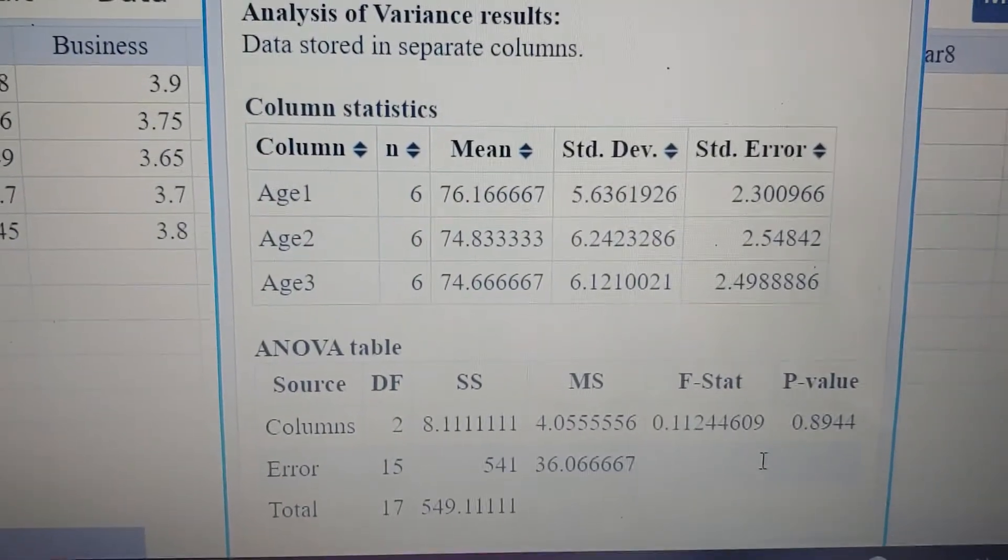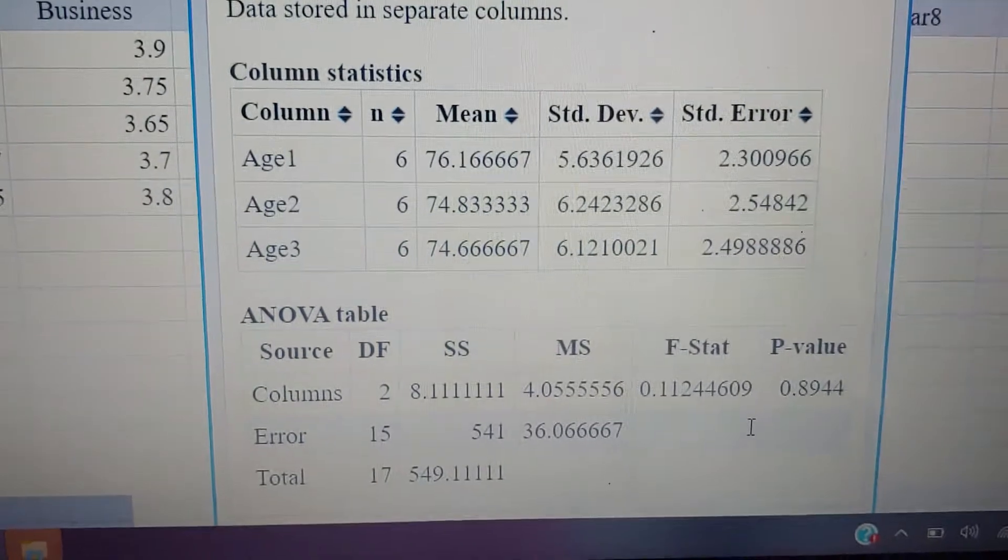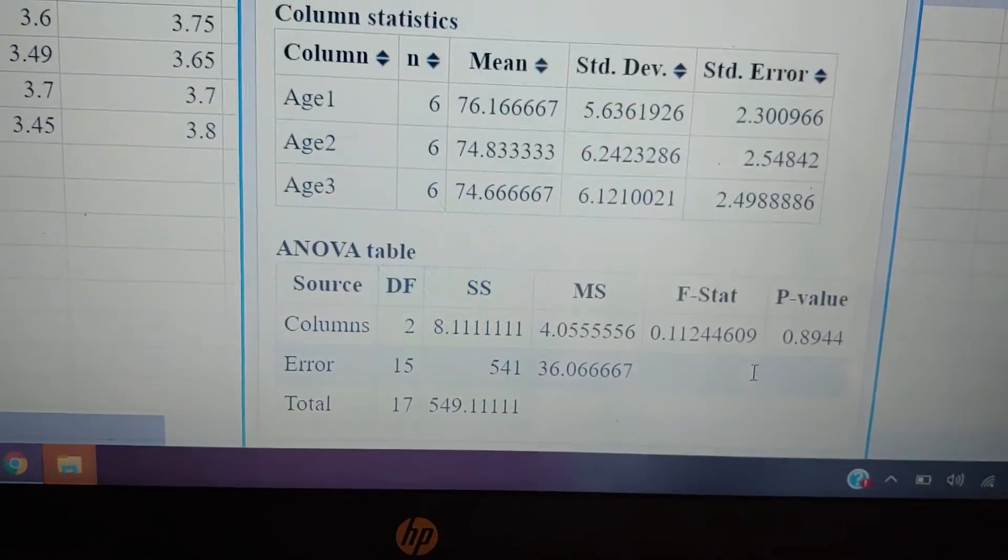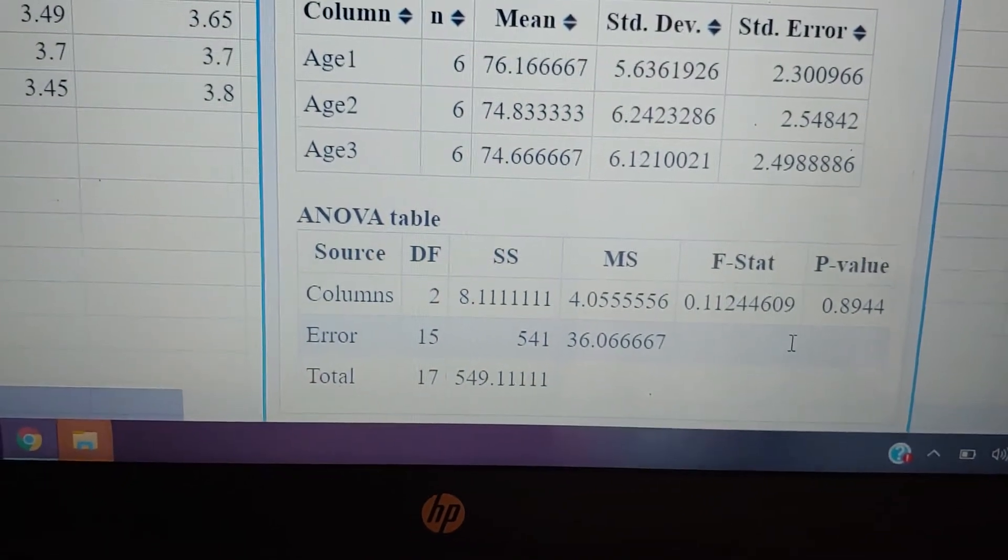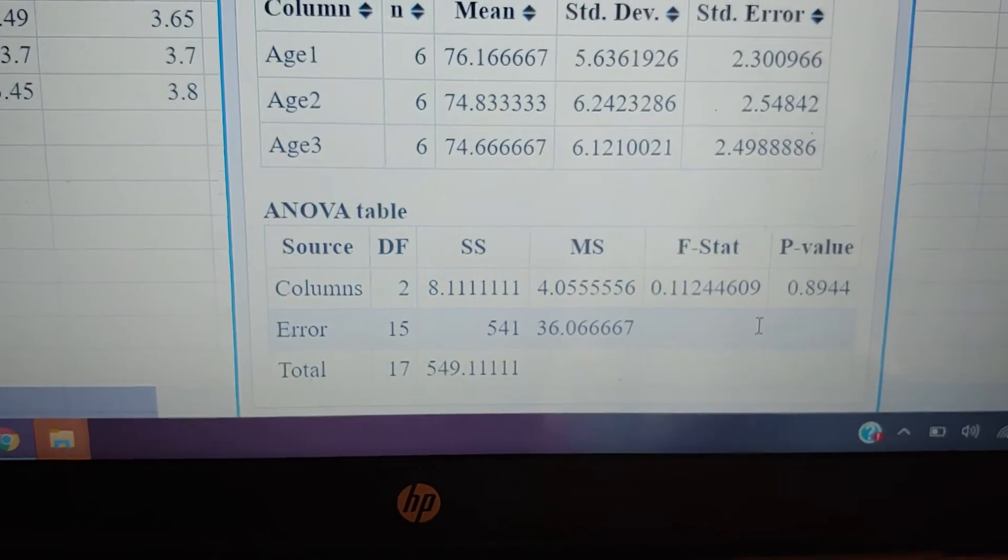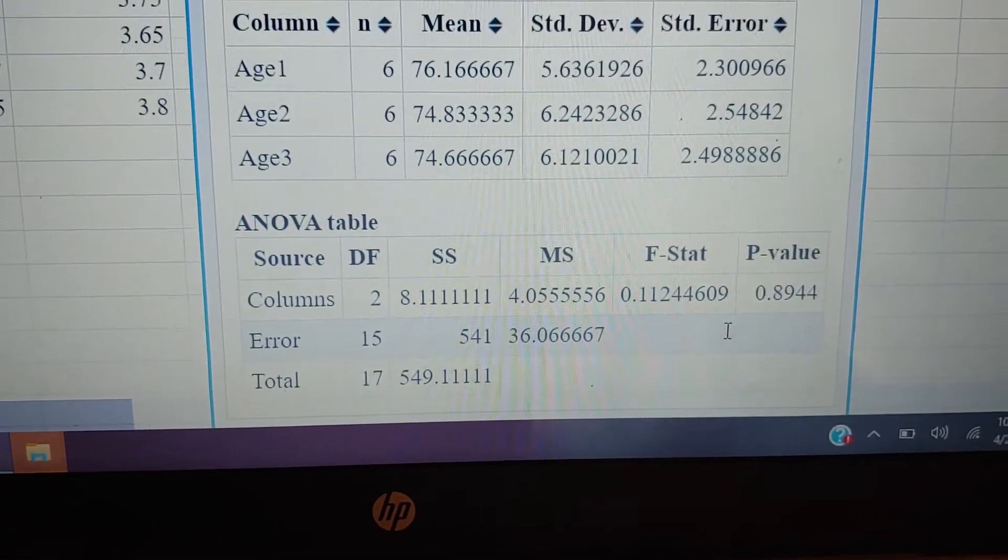So you can see that the means are all pretty much similar. Well, look at that F-STAT. That F-STAT, which measured how much the lines matched up and how well the boxes matched up, or a 0.11, and then I got a giant p-value.